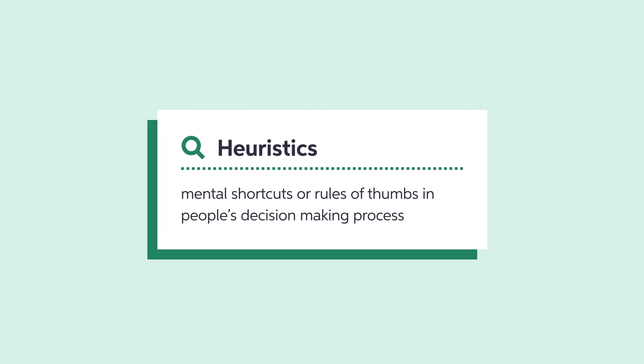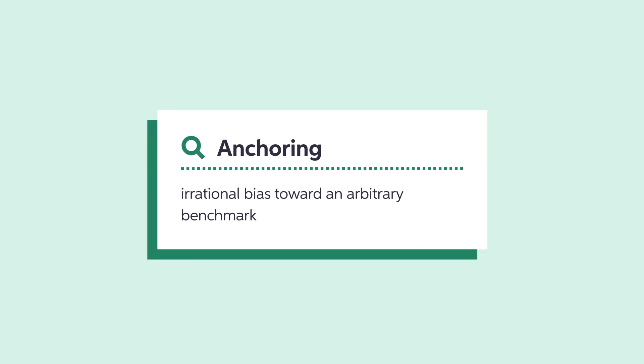Very often, we do not have all the information necessary to make a decision. We draw inferences from what we know using heuristics — mental shortcuts or rules of thumb. Heuristics can lead to mistakes that are consistent and predictable. For instance, on any given subject, people tend to evaluate new information based on the first piece of information they receive, even when the order is random. This process, called anchoring, implies that people adjust their opinions too little when new evidence is presented.